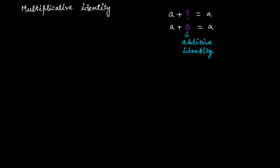So what will be the multiplicative identity? It's similar to additive identity, where you had to add some whole number to get the same integer. In this case, you'll have to multiply by some whole number. What whole number, when multiplied with any given number, gives you that number back as an outcome? That means a times what gives you a as an outcome?